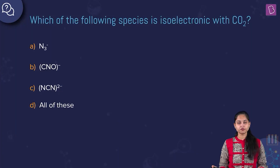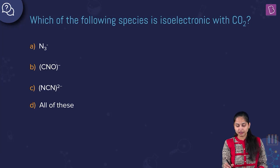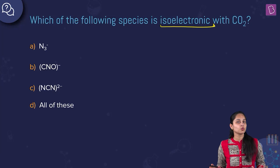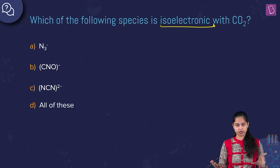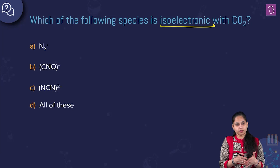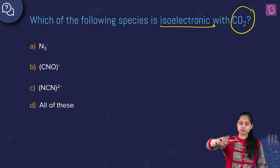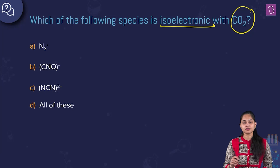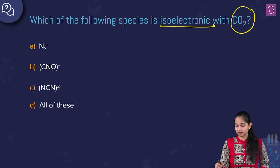Which of the following species is isoelectronic with carbon dioxide? Isoelectronic species are those which contain an equal number of electrons. We need to find which among the given options has equal number of electrons as carbon dioxide.